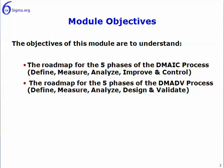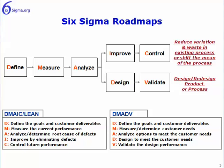The objectives of the module: you want to understand the five phases of the DMAIC methodology and also the five phases of the DMADV methodology. On the roadmaps, you've got Define, Measure, Analyze, Improve, and Control — DMAIC — and we use that path of improvement for reducing variation and waste reduction and elimination. The other roadmap is Define, Measure, Analyze, Design, and Validate — DMADV — the methodology for designing or redesigning products or processes, with a brief description of each of those five phases summarized below.